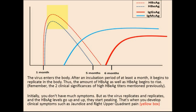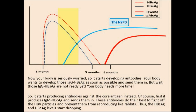Remember the two clinical significances of high E antigen titers: the increase in viral replication and the increase in likelihood of transmitting the infection. Initially you don't have many symptoms, but as the virus replicates and the hepatitis B surface antigen levels peak, that's when you develop clinical symptoms such as jaundice, fever, and right upper quadrant pain. Now your body is seriously worried, so it starts developing antibodies. It wants to develop IgGs against the surface antigen, but those aren't ready yet. Therefore, the body starts producing antibodies against the core antigen instead — first IgMs against the core antigen — and these do their best to fight off viral particles. Thus, hepatitis B surface antigen and E antigen levels start dropping.